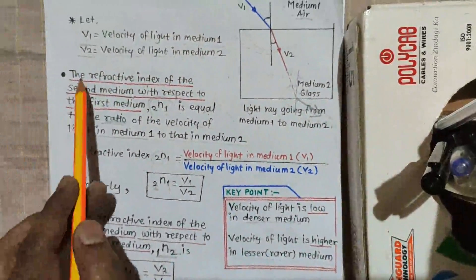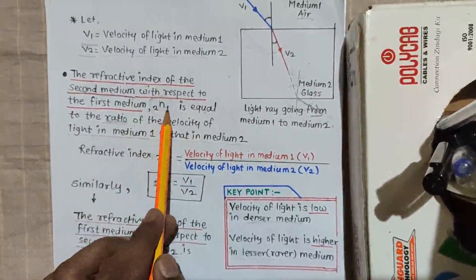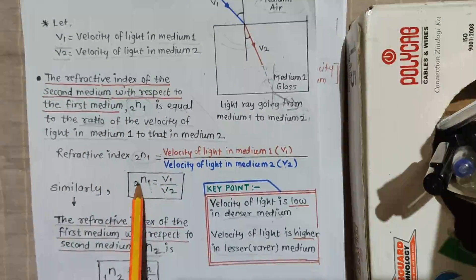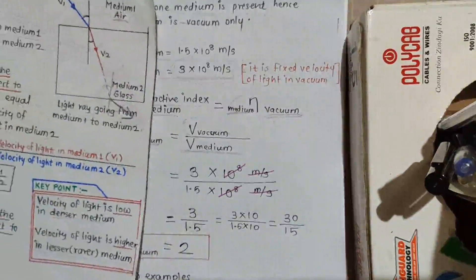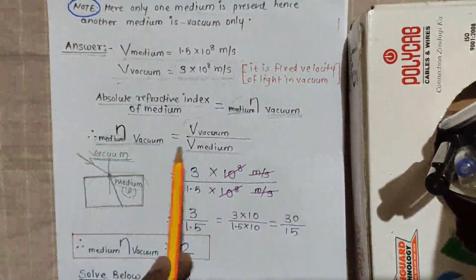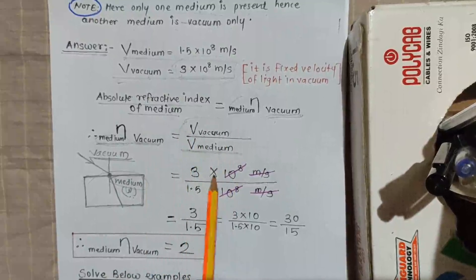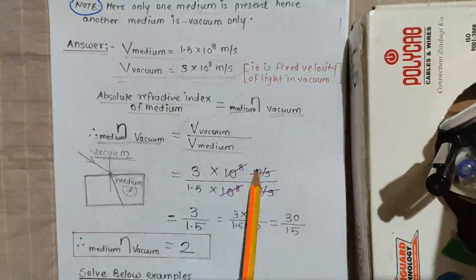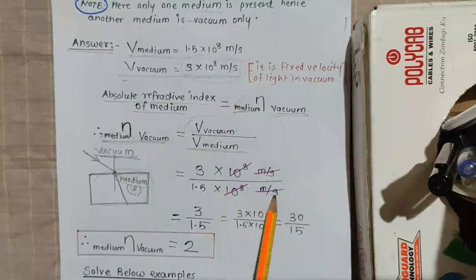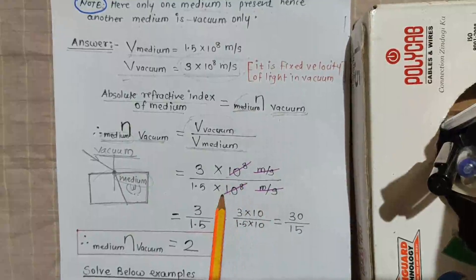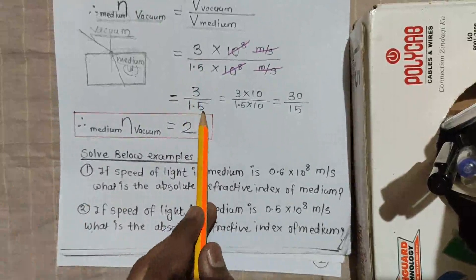Using the formula for refractive index of the second medium with respect to the first medium — which we covered previously — we put the values: 3 × 10⁸ m/s divided by 1.5 × 10⁸ m/s. The 10⁸ terms cancel, and the meter-per-second units cancel, leaving only 3 divided by 1.5.